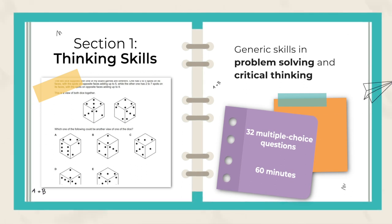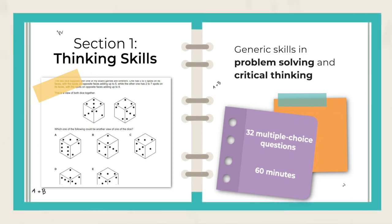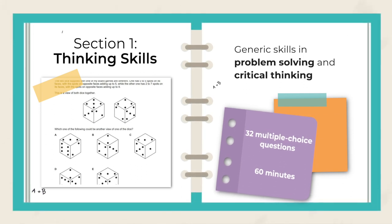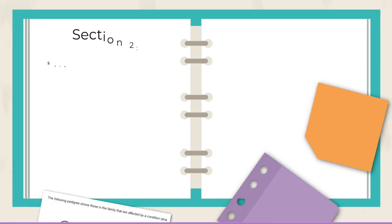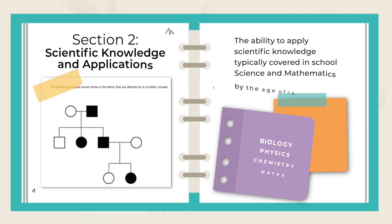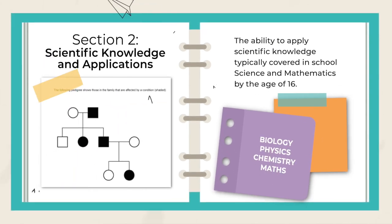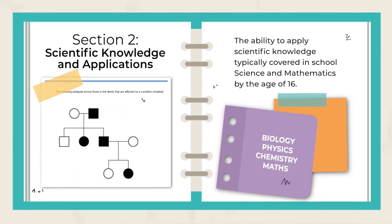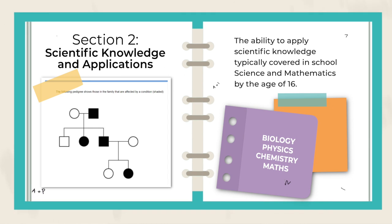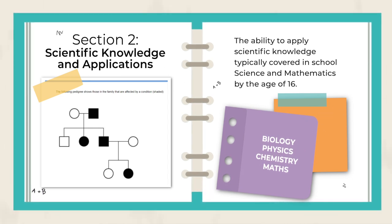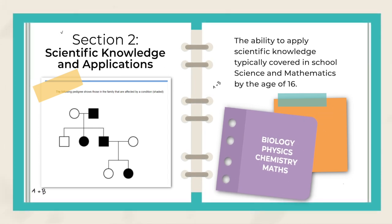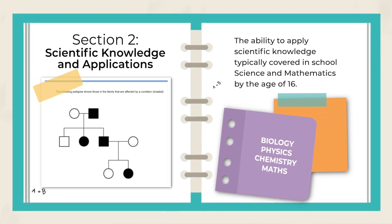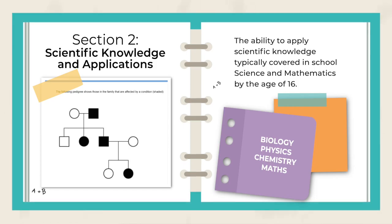Section one is 32 multiple choice questions lasting one hour. Section two is Scientific Knowledge and its Applications — everything from biology, physics, chemistry and maths that you will have learned in school up to the age of 16.